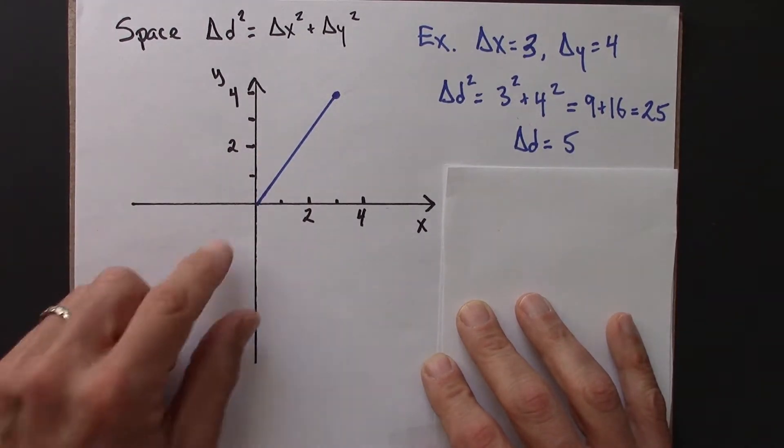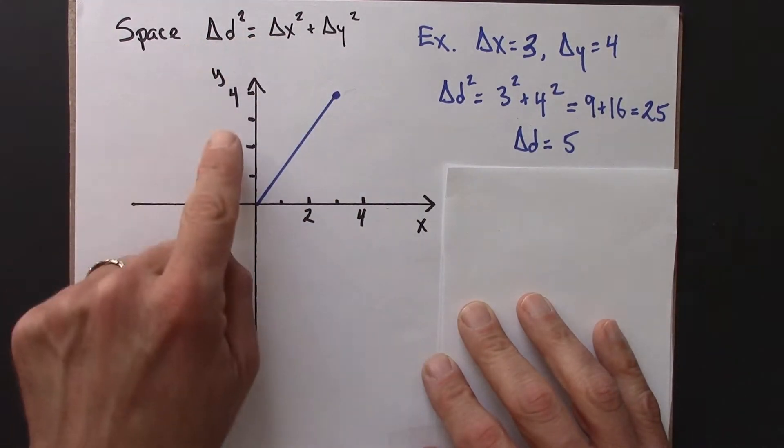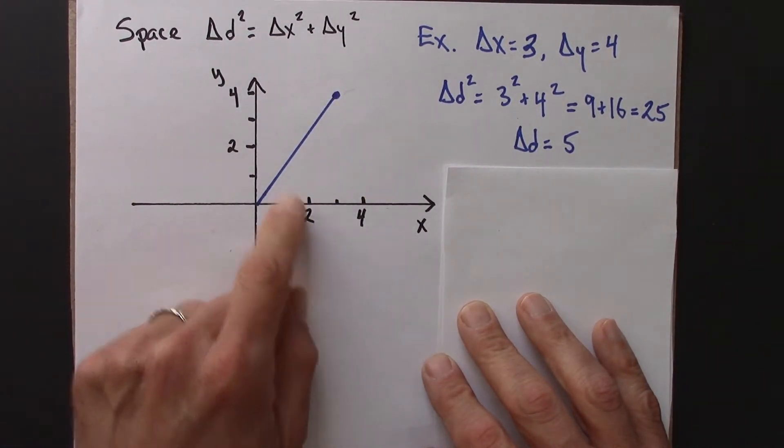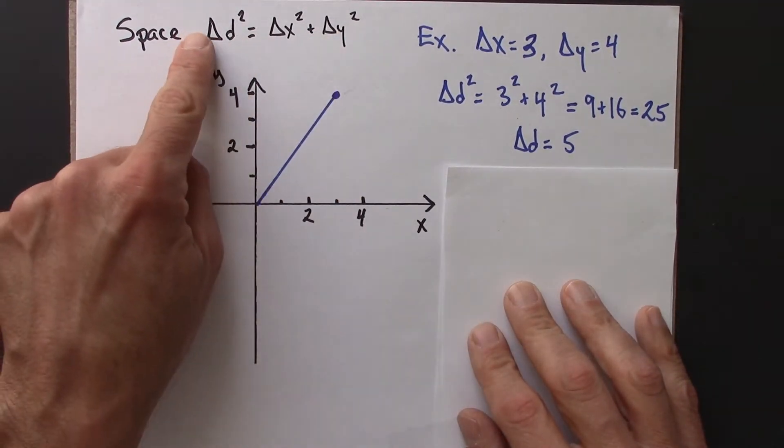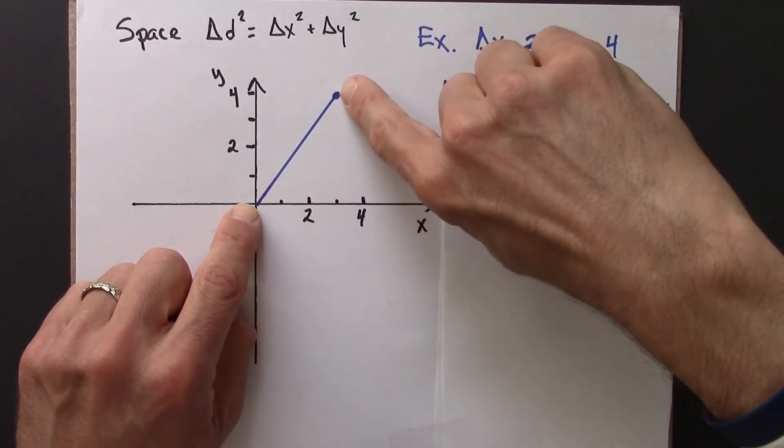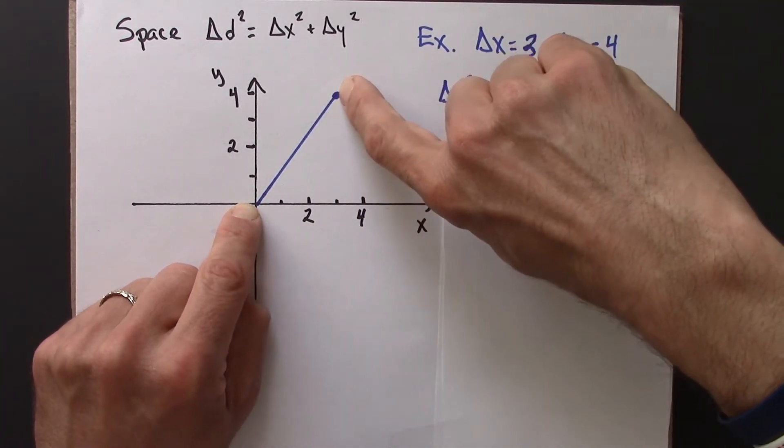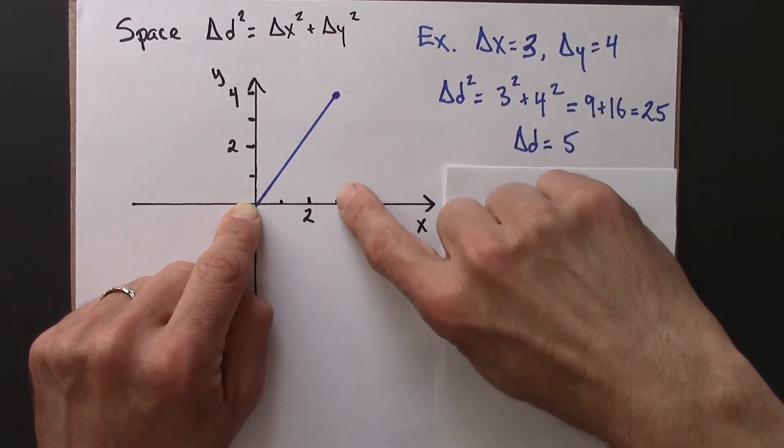And we know how to measure distance in space. It's given by the distance formula, the metric for Euclidean space x and y, which is the Pythagorean theorem: delta x squared plus delta y squared is delta d squared. So the picture is we have two points, the origin and then this blue point here, and we know how to calculate the distance between them given an x and a y.